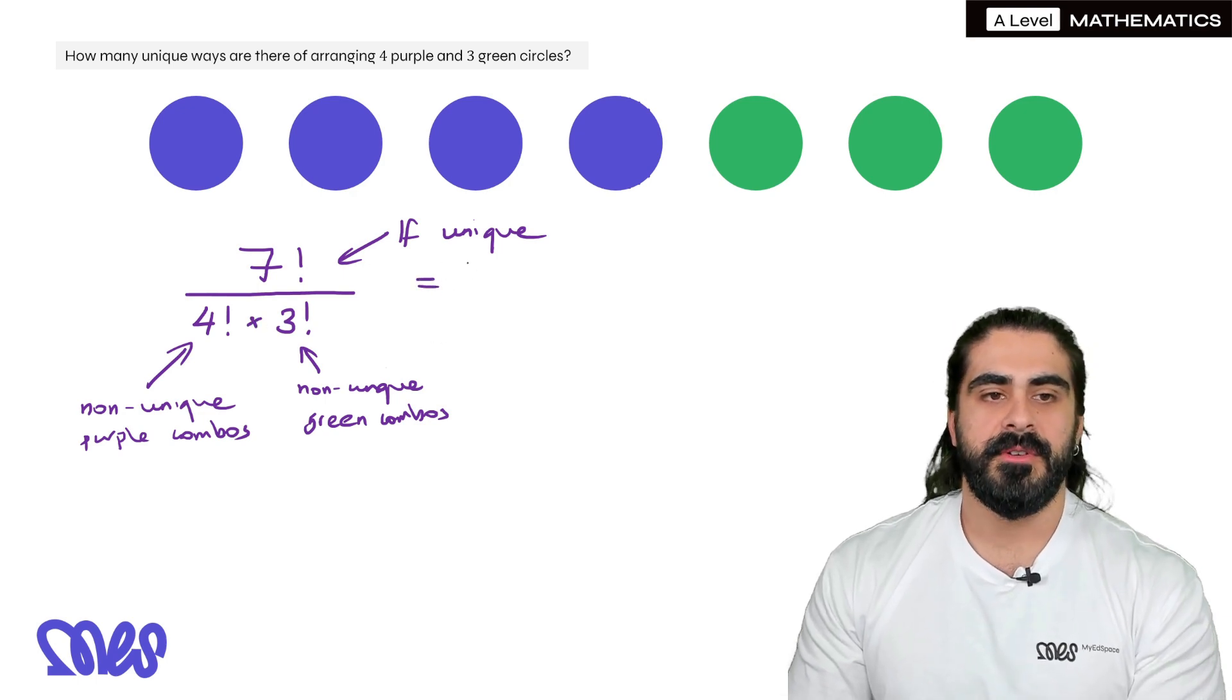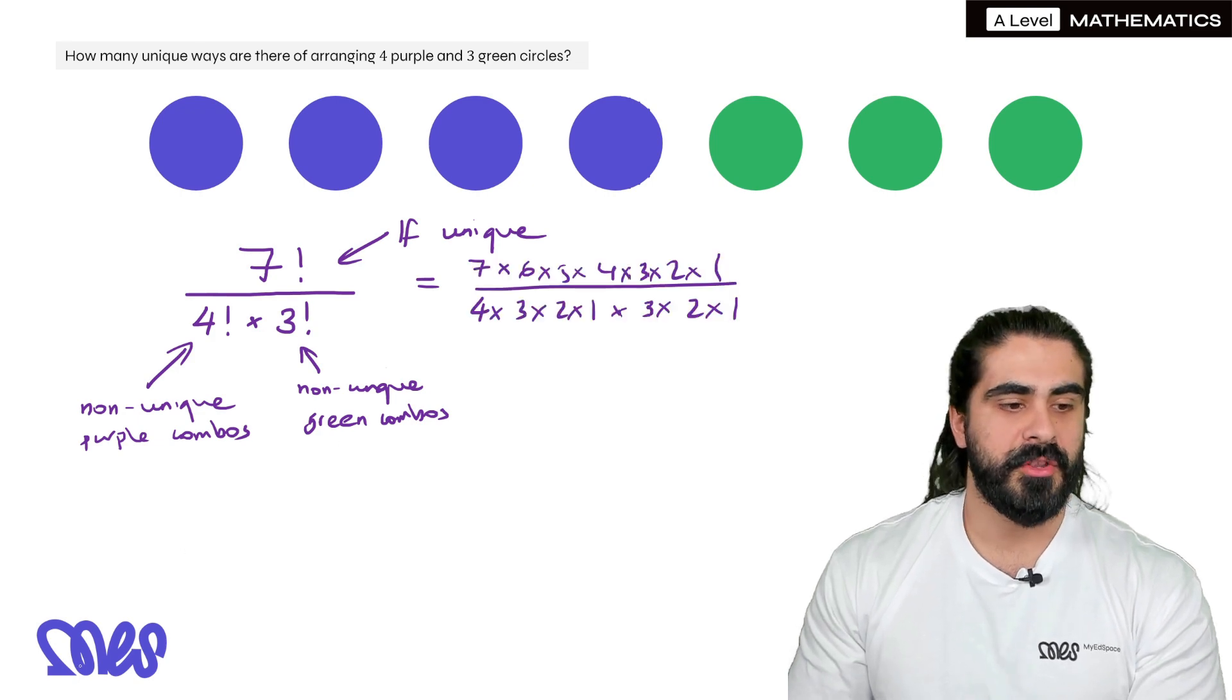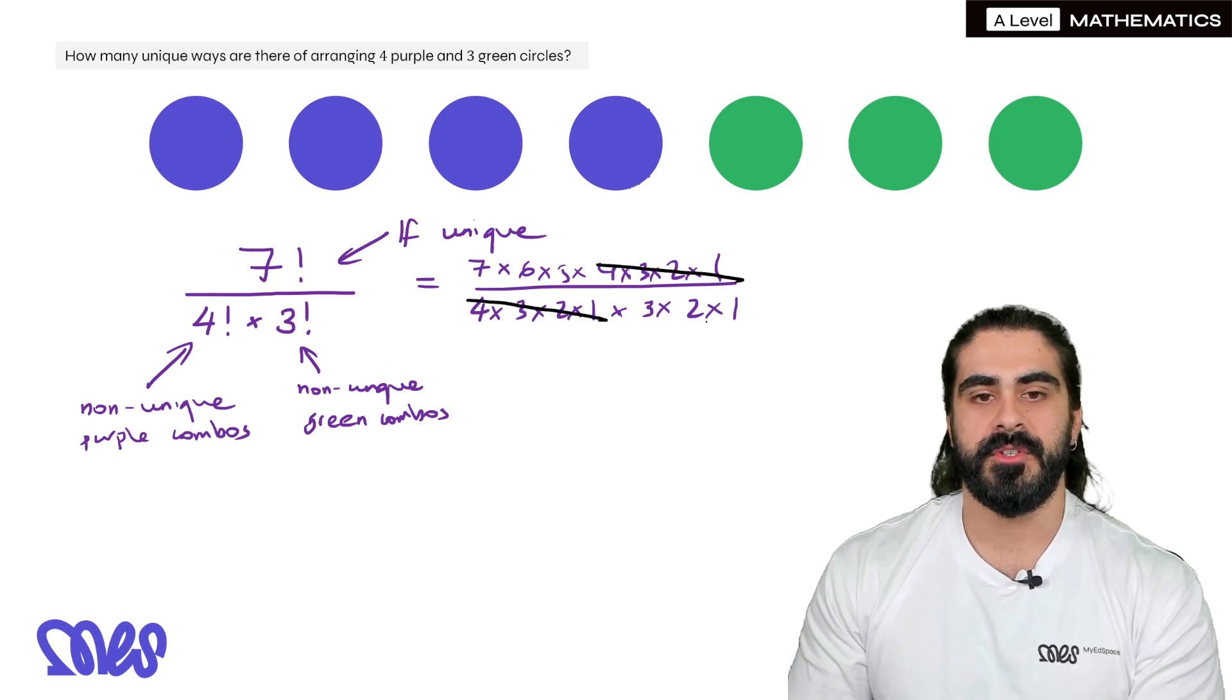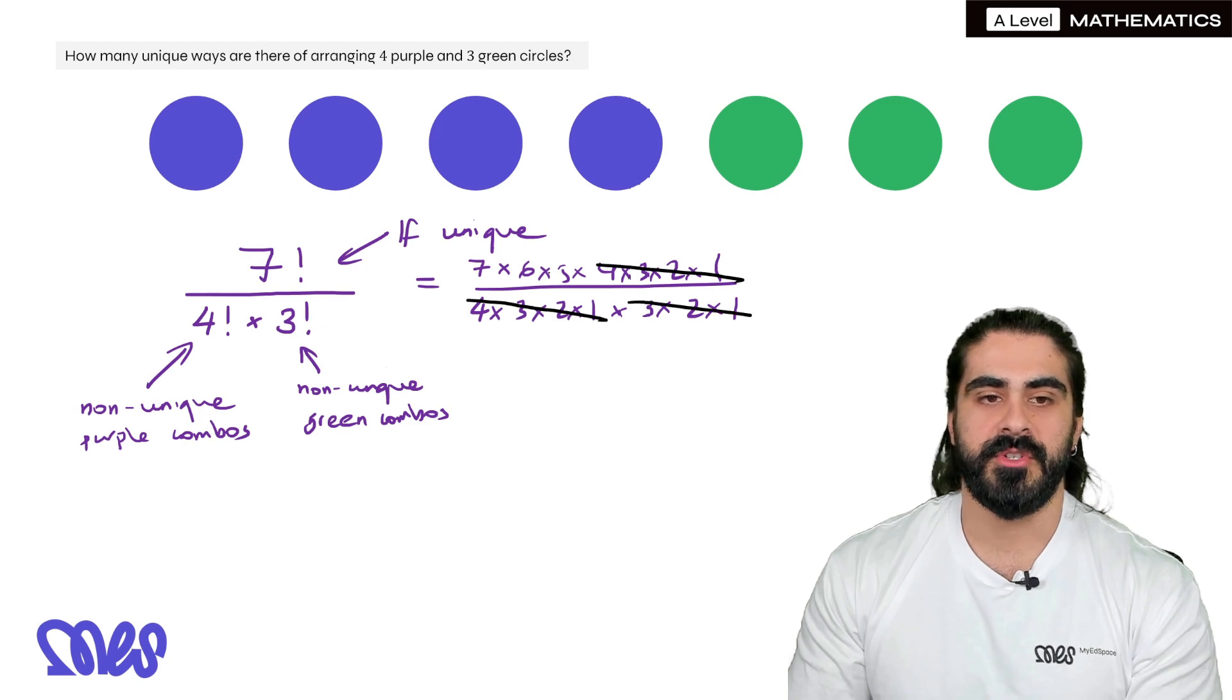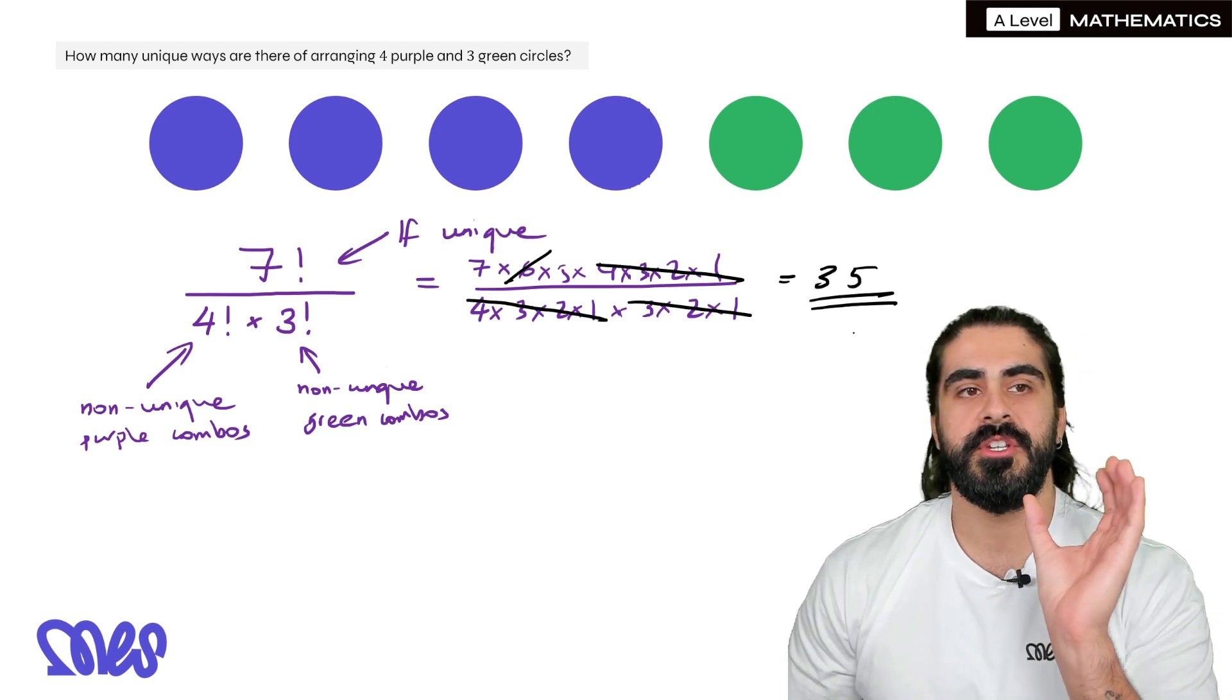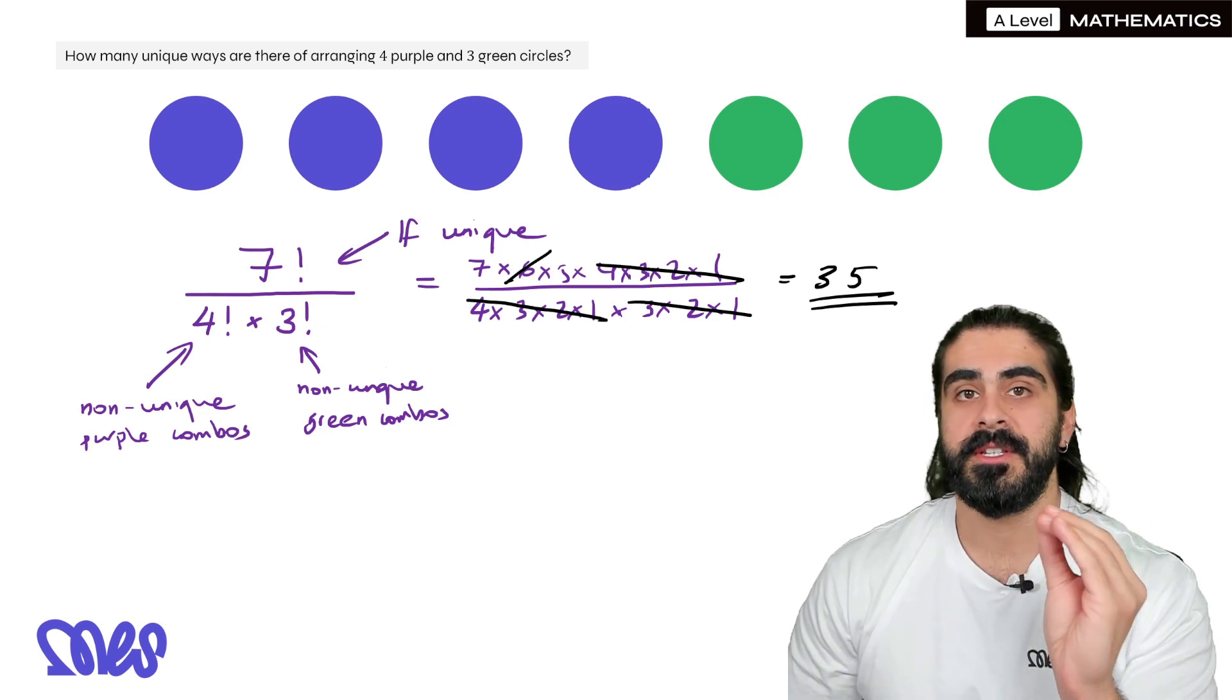So we can simplify. I'm going to do this explicitly without using the calculator. Now you might notice on the top and the bottom, you have similar combinations. Four, three, two, one. Four, three, two, one. You can also say three times two times one is six. This will just cancel out the six. And then you're left with seven times five on the top, 35. There's only 35 ways of arranging four purple and three green circles, and we don't need to list them.